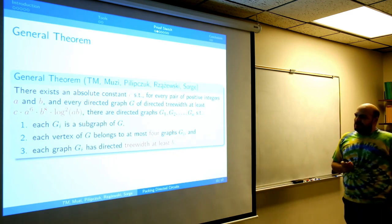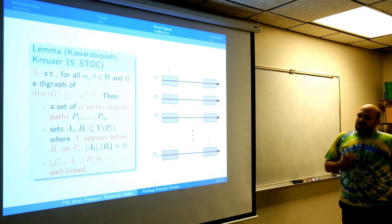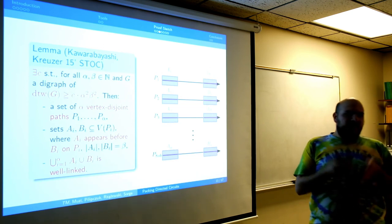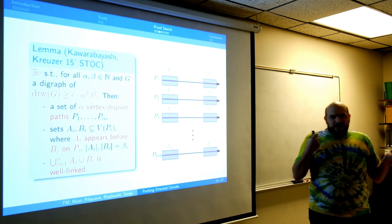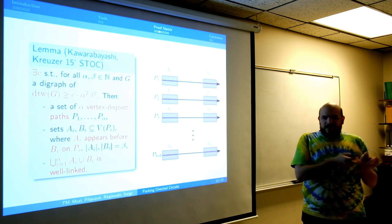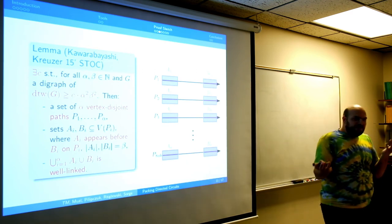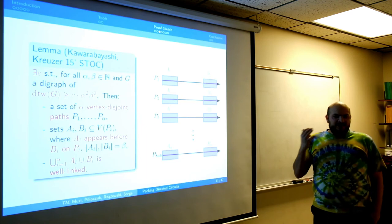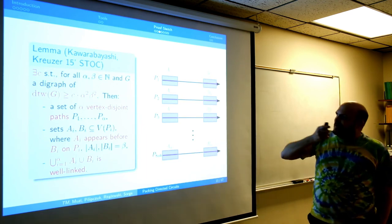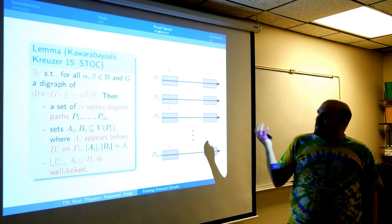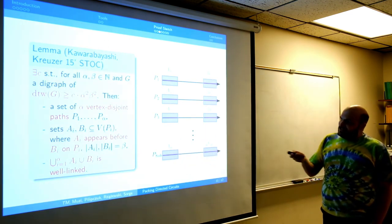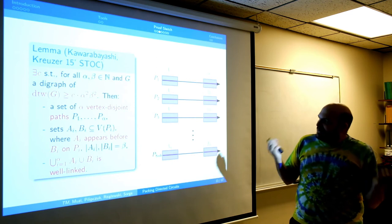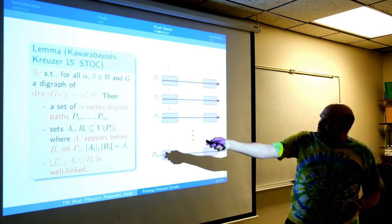Here is how the proof proceeds. Usually large directed treewidth means a large well-linked set, and this is an easy correspondence of the same order. But we need more structure on this well-linked set, so we use the Schikowitzer lemma, which is quite recent. We ask not only for a well-linked set but for a well-structured well-linked set, paying a quadratic factor for it. So we need directed treewidth at least roughly quadratic.